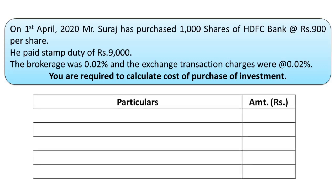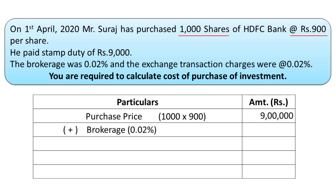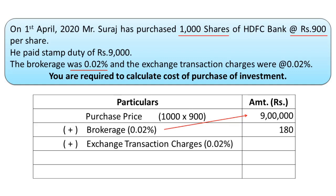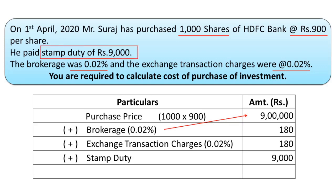We apply the same formula. First, the purchase price: 1000 shares multiplied by Rs 900 equals Rs 9,00,000. Then we add brokerage, which is 0.02% on purchase price — 0.02% on Rs 9,00,000 equals Rs 180. We add exchange transaction charges, again 0.02% on Rs 9,00,000, which is Rs 180. Finally, we add stamp duty of Rs 9,000 as given in the problem. The total comes to Rs 9,09,360, which is your cost of purchase of the investment.